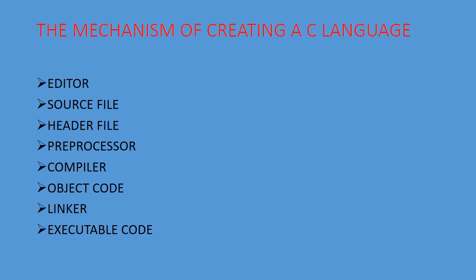Next is the compiler, which translates the program written in C language into machine language that the computer understands. The computer knows only machine language — the binary language — so the C code written in English must be converted to binary. After translation, what we get is the object code, which is the program in zeros and ones.